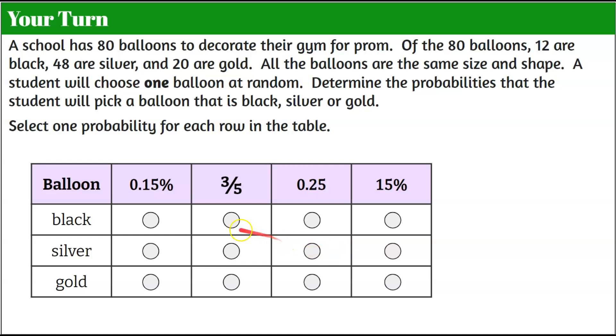Your turn. Here's another version of a probability model that you're going to answer. It could appear like this on your state test or test in your classroom. A school has 80 balloons to decorate their gym for prom. Of the 80 balloons, 12 are black, 48 are silver, and 20 are gold. All the balloons are the same size and shape. A student will choose one balloon at random, determine the probabilities that the student will pick a balloon that is black, silver, or gold, and select one probability for each row in the table. So here's where you pause, you find the probabilities, make your best answer choices, and then come back to see mine. Good luck.